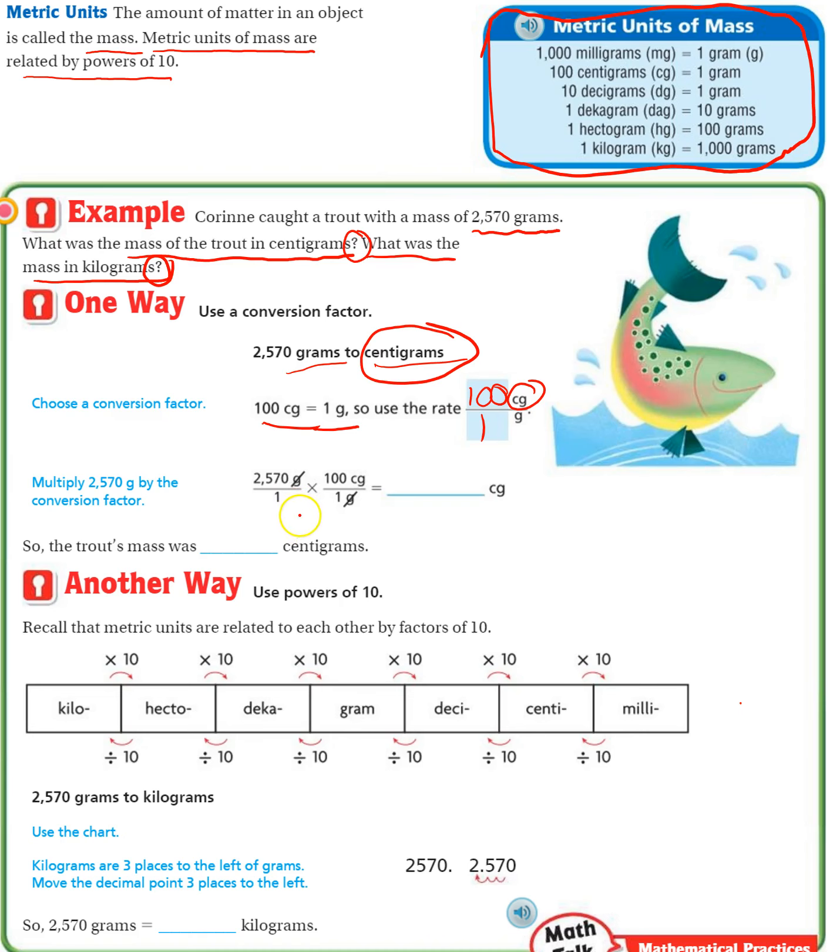We set up our conversion rate. We multiply it by 2,570, the number we started with. That's the same thing as multiplying it by 2,570 over 1. Cross simplify our grams. Where did I get 100 over 1? From right here. That's our rate. We wanted centigrams, so that's why centigrams are on top.